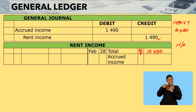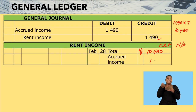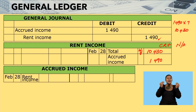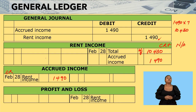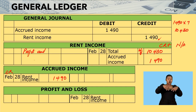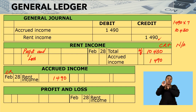We are still being owed by this tenant. Income being owed is $1,490. So in my rent income account, which increases on the credit side, I will bring the accrued income of $1,490. I will debit the accrued income account with $1,490. Remember, your rent income account must then be closed off to profit and loss.